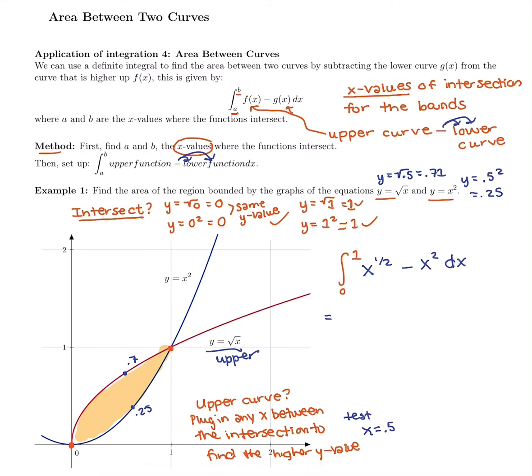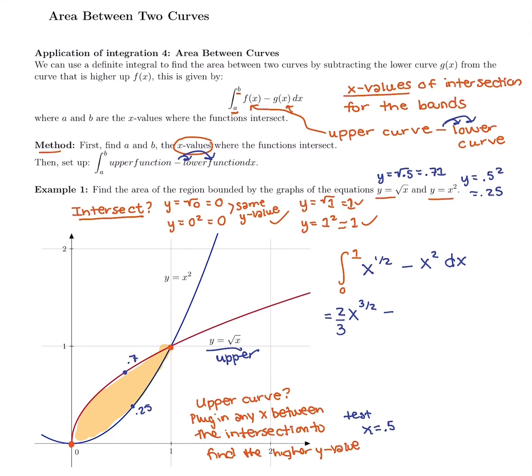x to the 1/2, add 1 to it, you get 3/2. Instead of 1 over 3/2, we're going to flip it to be 2/3 x to the 3/2, minus the integral of x squared. 2 plus 1 is 3, so we have 1/3 x to the 3, and no plus C, we're going to use an evaluation bar and plug in from 0 to 1.